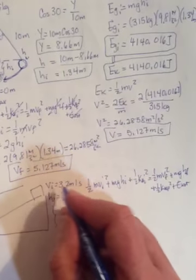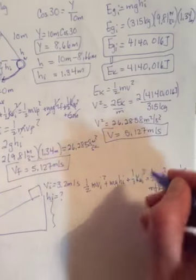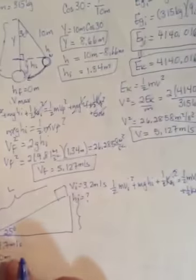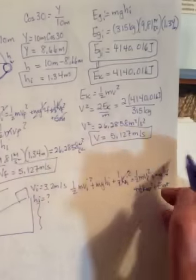So at the top, there is a speed and a height, but no spring. At the bottom, there's a speed, but no height, no spring, and it says frictionless.